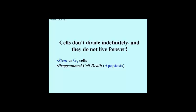Non-dividing cells are arrested in G0, the diploid state, before entering another S phase before their DNA can be replicated again. In fact, most mature differentiated cells stop dividing altogether after differentiation. So cells don't divide indefinitely, but they also don't live forever. When they die, they can be replaced by stem cells.